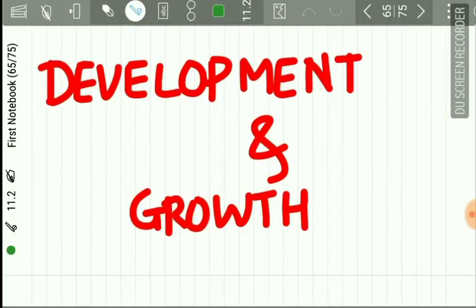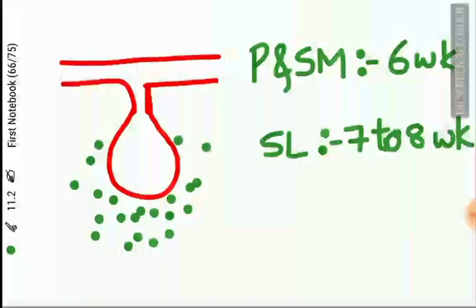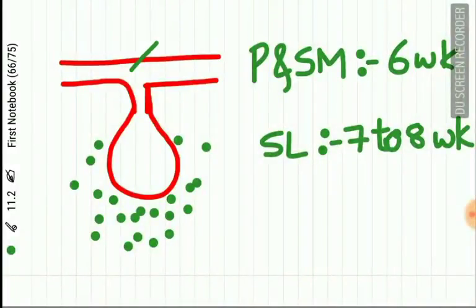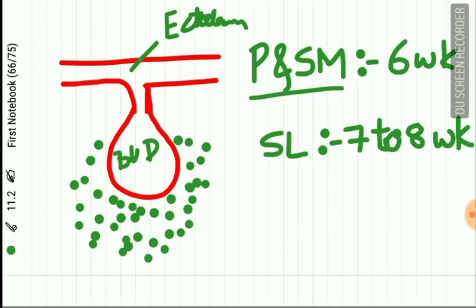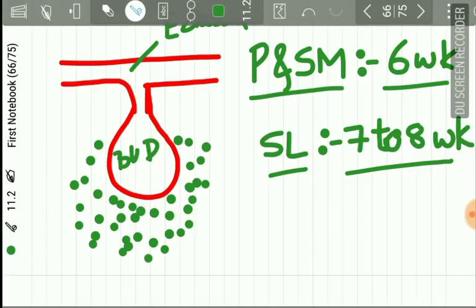The salivary glands arise from the ectoderm of the oral epithelium, forming a bud-like structure with proliferation of the underlying mesenchyme. The primordium of the parotid and submandibular glands forms during the 6th week of intrauterine life, while the sublingual gland forms at the 7th to 8th week.